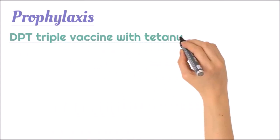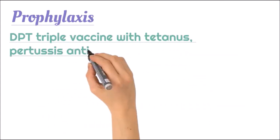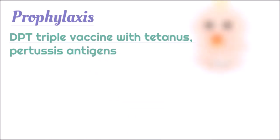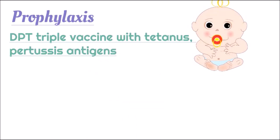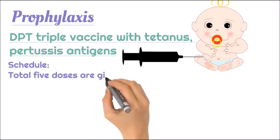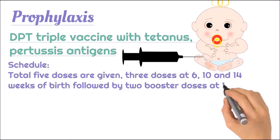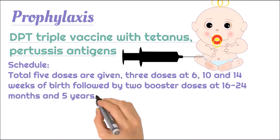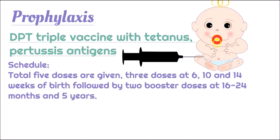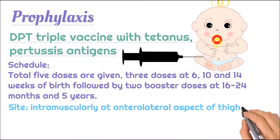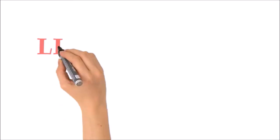For prophylaxis, we give the DPT triple vaccine, which stands for diphtheria, pertussis, and tetanus. A total of 5 doses are given: 3 doses at 6, 10, and 14 weeks of birth, followed by 2 booster doses at 16 to 24 months and then at 5 years of age. The site of vaccination is primarily the anterolateral aspect of the thigh.